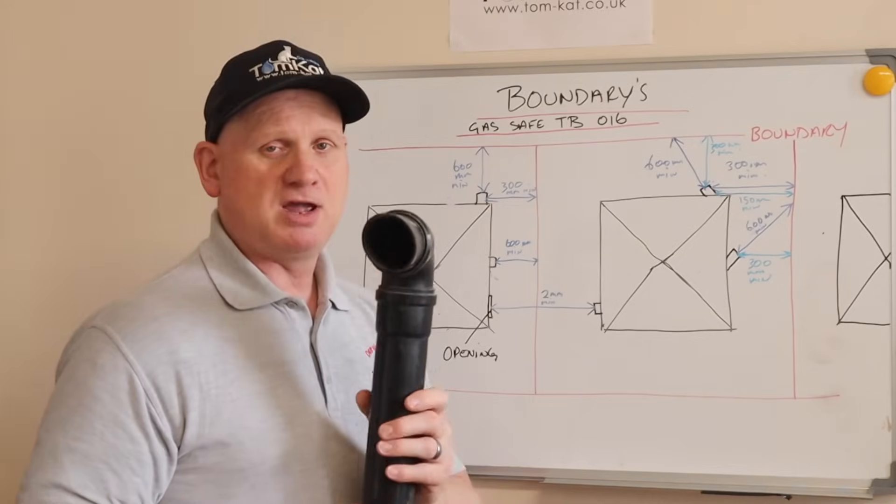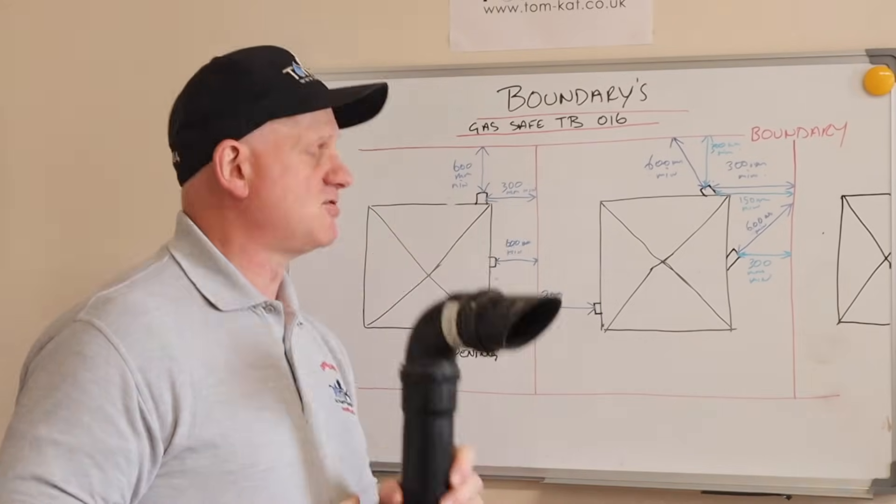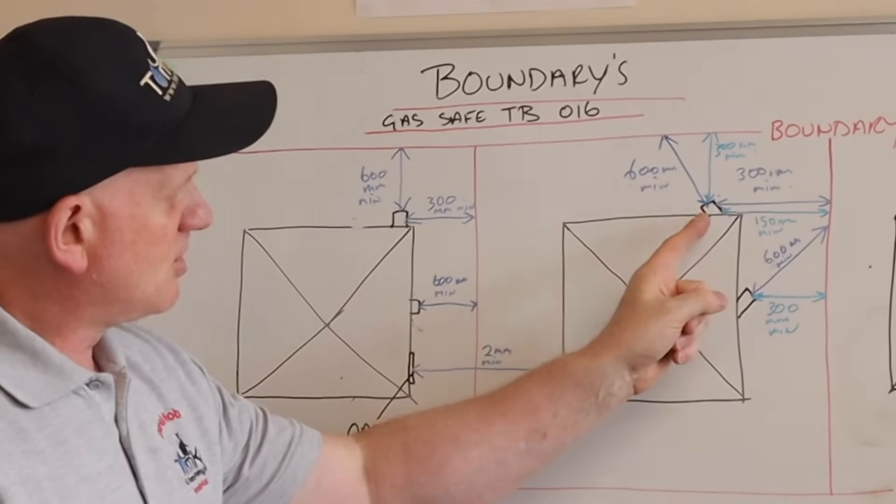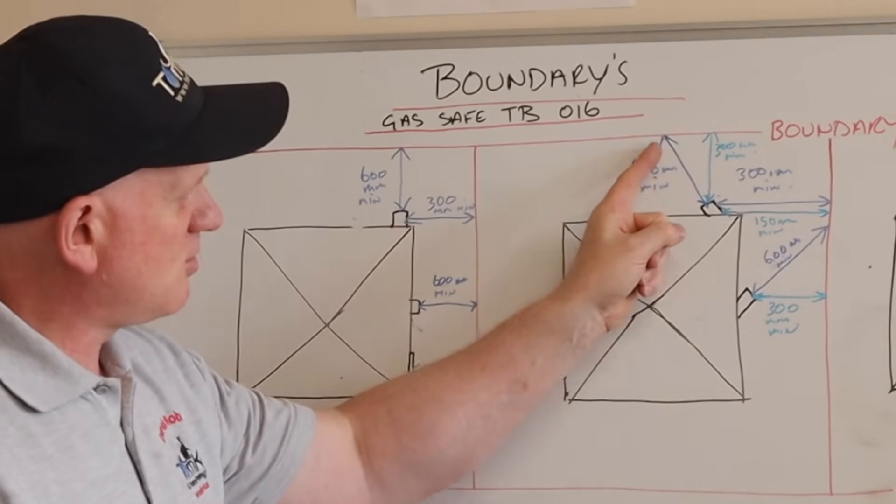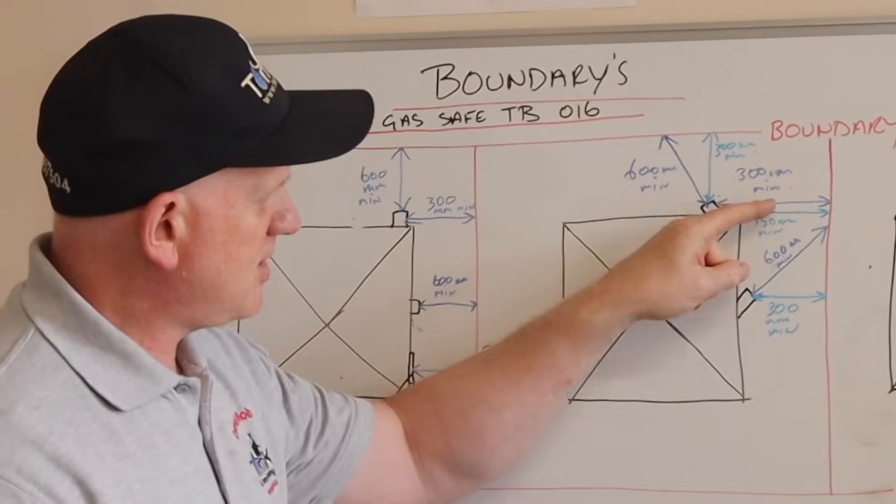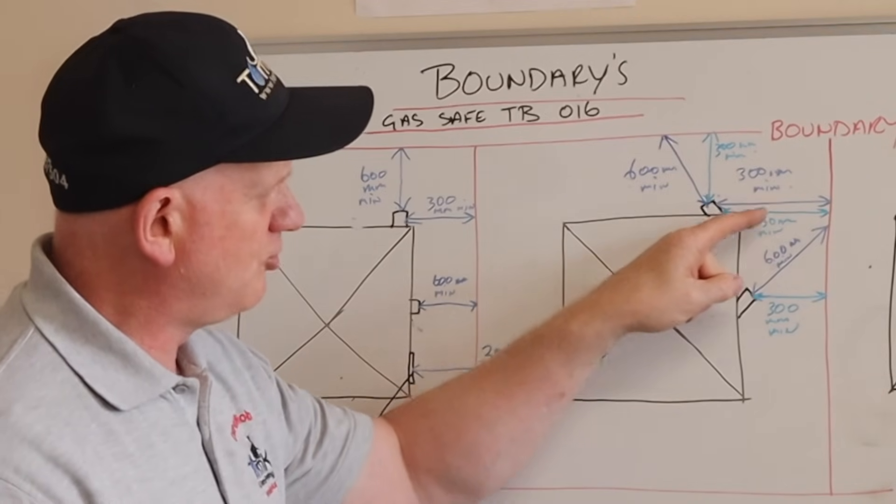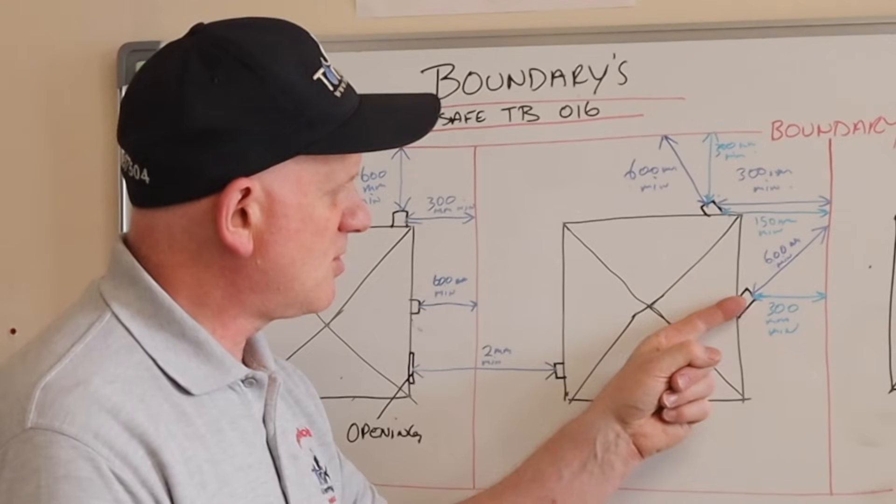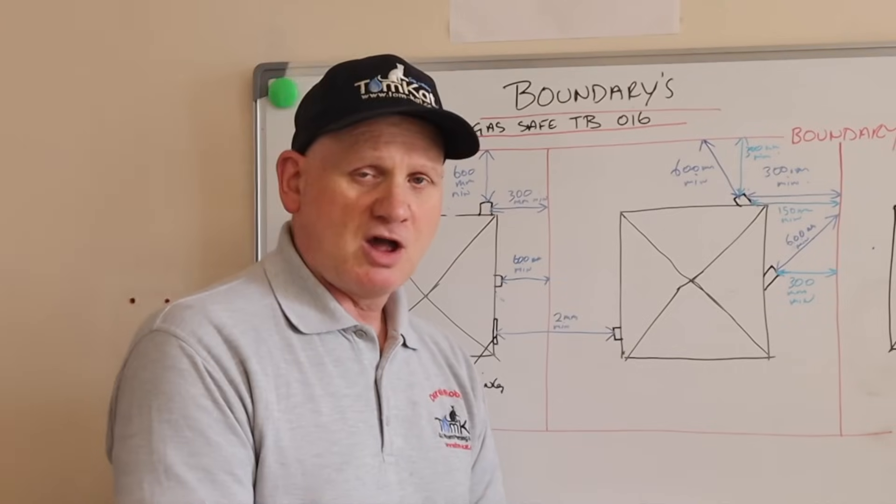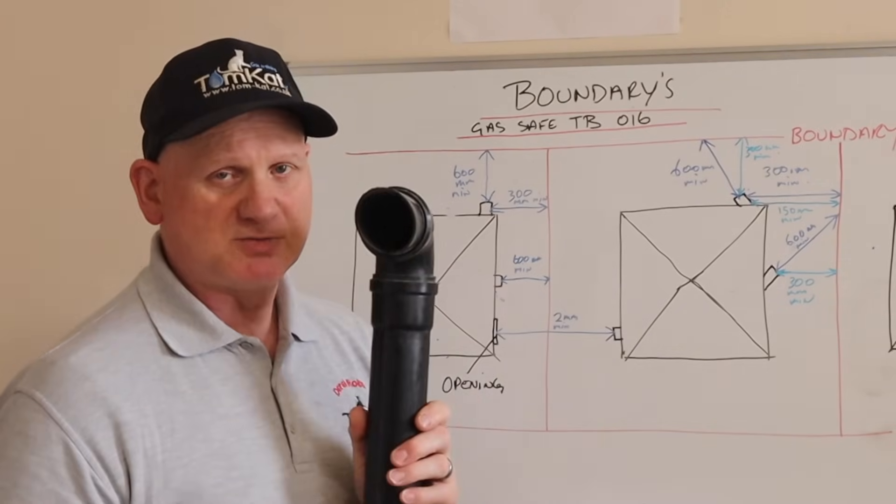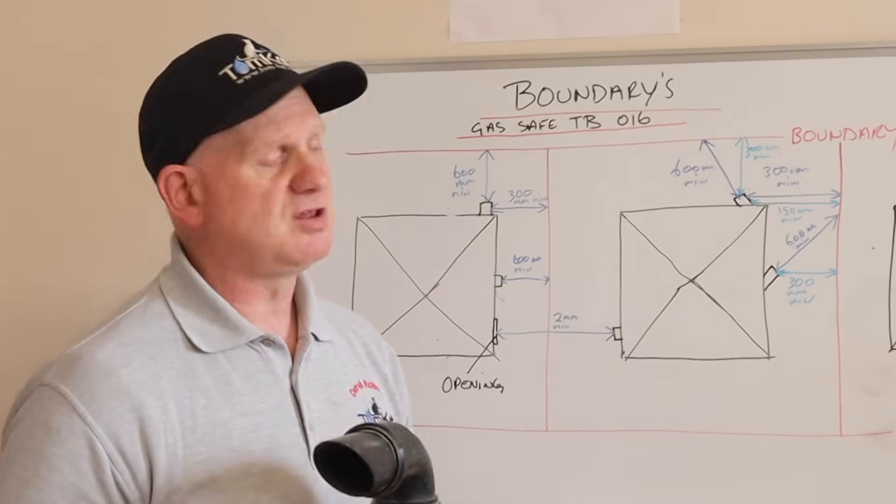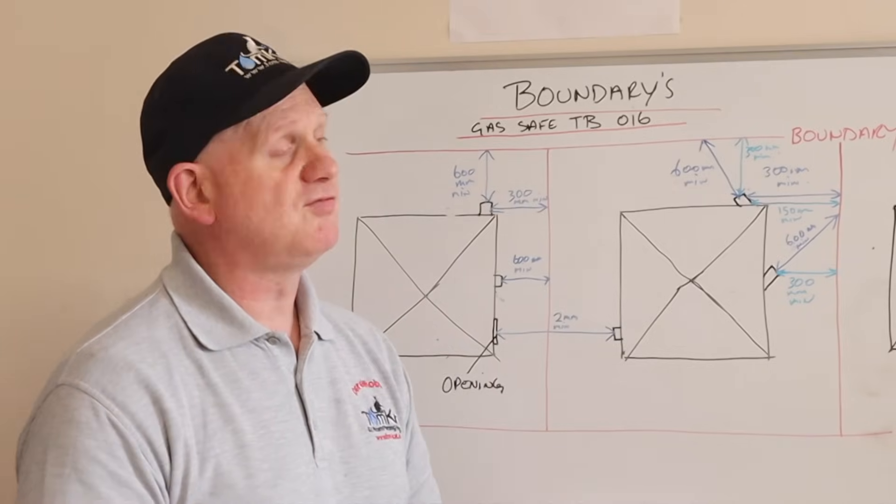Now, if we take our plume kit and we turn it 45 degrees, then we can reduce these measurements by half. So we've turned it 45 degrees, we've still got 600 there, that means we've only got 300 there. We've still got 300 here, but that means we've got 150mm. We've still got 600 here, but we've got 300 directly across. So, that is how this little plume management kit can alter your distances.